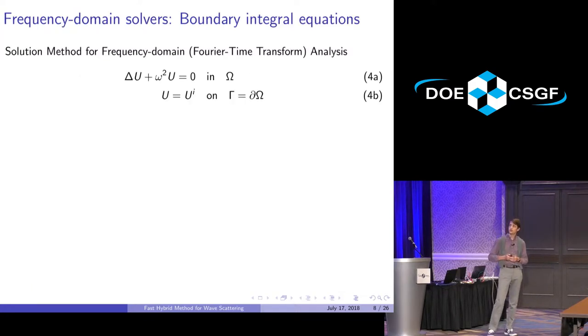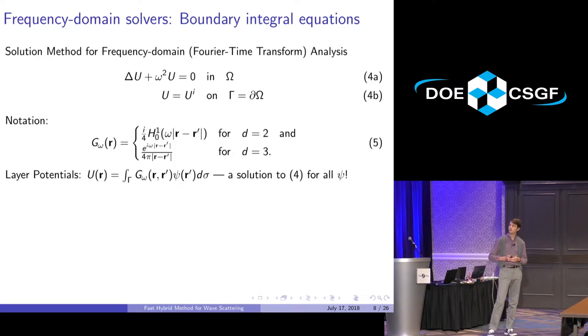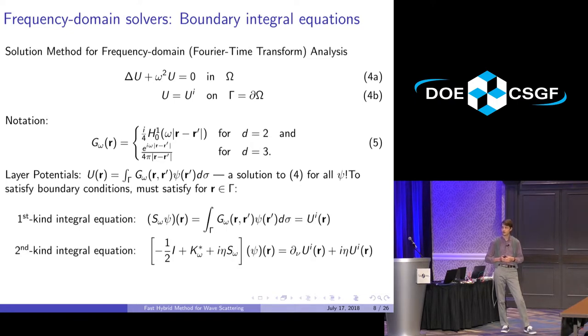Frequency domain solvers solve the Helmholtz equation. These are the fundamental solutions for the Green's functions for the frequency domain problems, and the method of layer potentials allows you a solution in the frequency domain. It's just like in the time domain problem, but only in frequency domain. You can get your solution, and then you have to solve a boundary integral equation to find the right density. There are various formulations you can use.